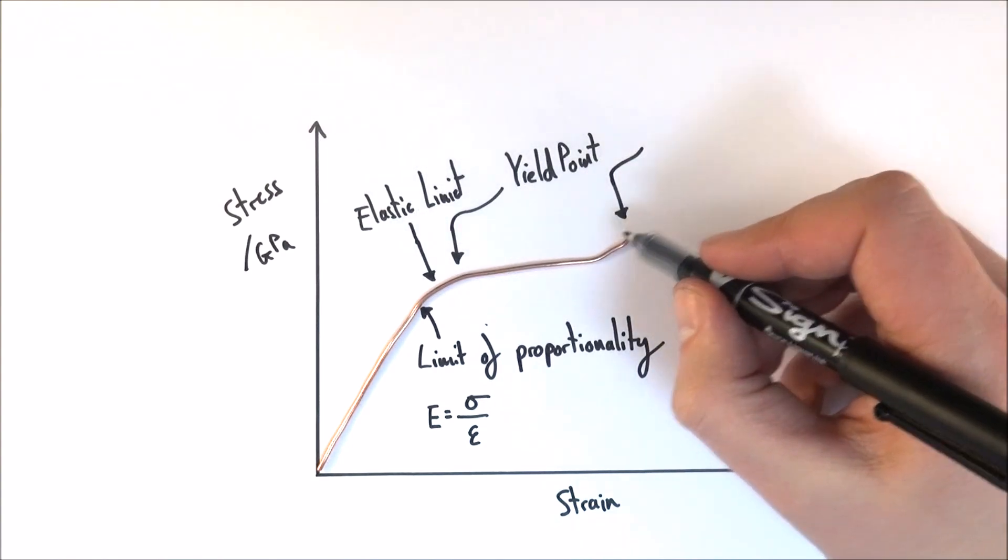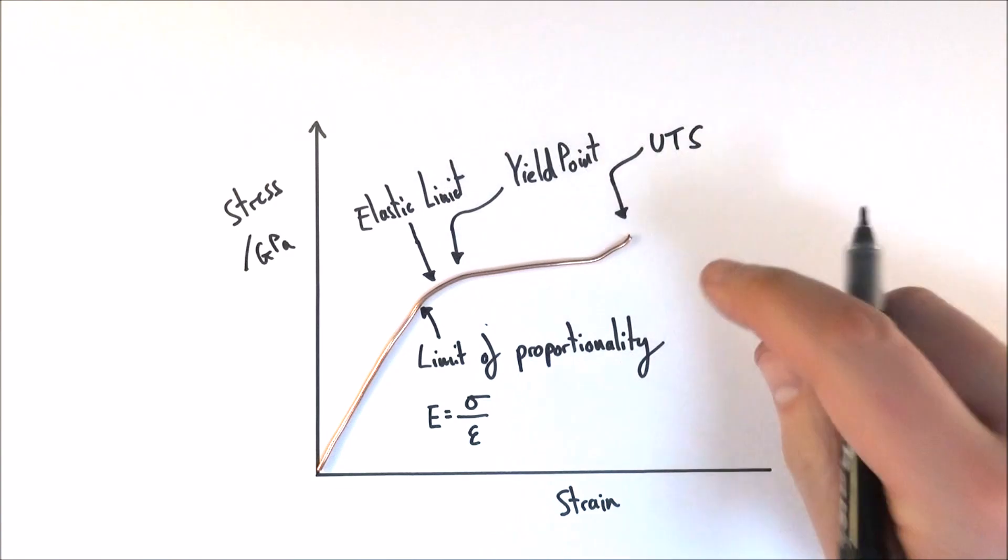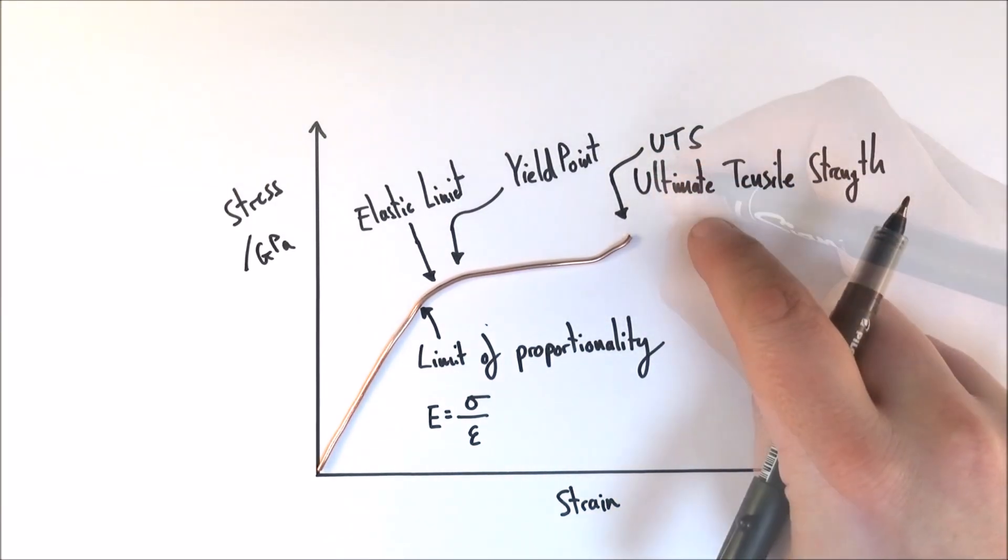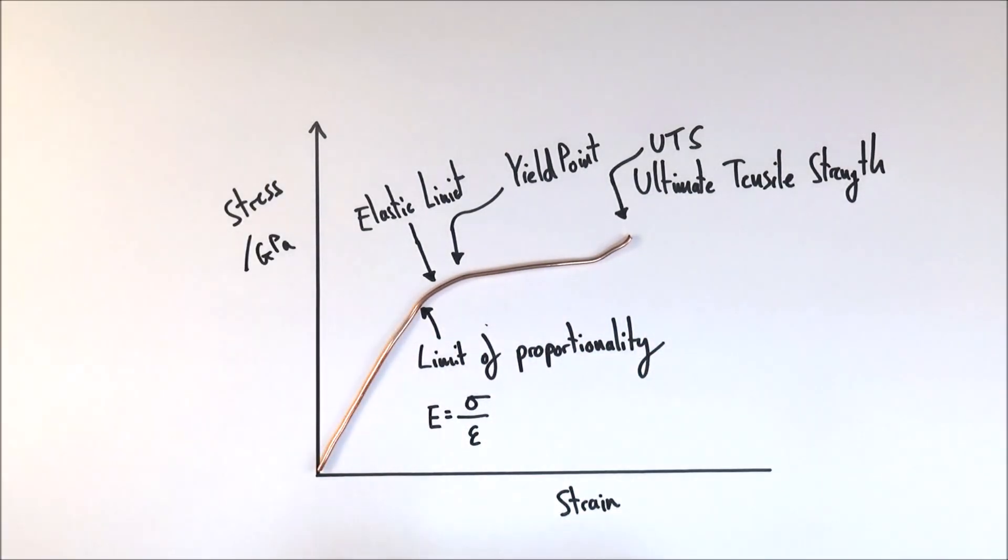This is often the highest stress, and this is often shortened to the UTS, which stands for the ultimate tensile strength, and it's this point here where failure occurs. So these are the four points that you really need to know about.